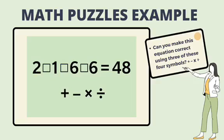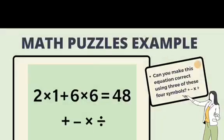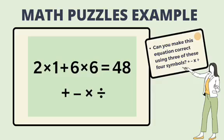Can you make this equation correct using three of these four symbols, which is addition, subtraction, multiplication, and division? Because the order of operation doesn't apply and no fractions or negative numbers are involved, the answer is 2 times 1 plus 6 times 6 is equal to 48.